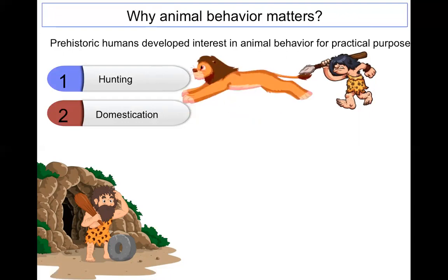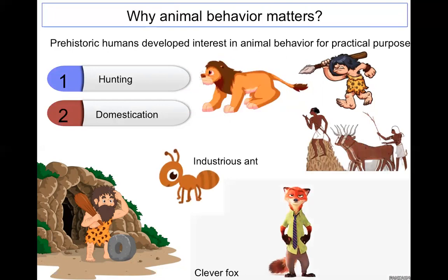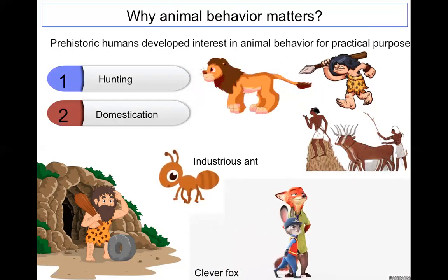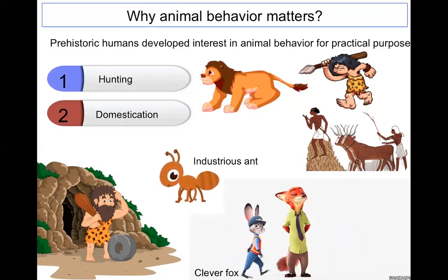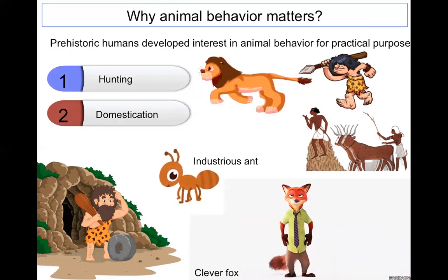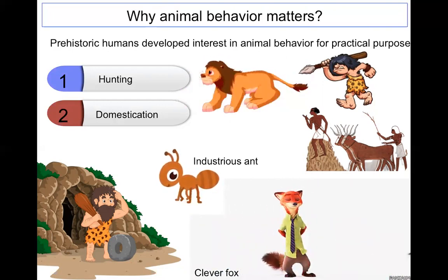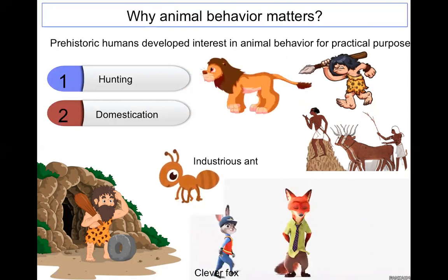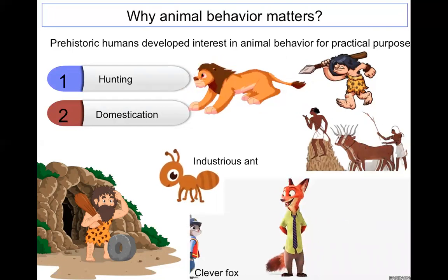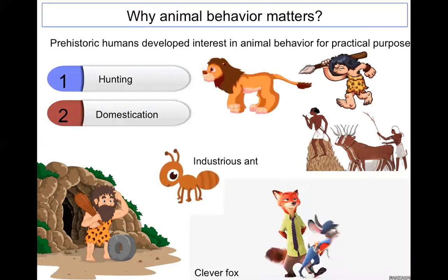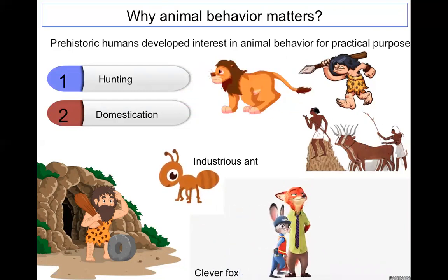As humans observed animal behavior, animals also became symbols of certain qualities. For example, the fox became a symbol of cunning, and the ant became a symbol of being industrious or hardworking. Animal behavior matters because of our need for hunting, food, and shelter.